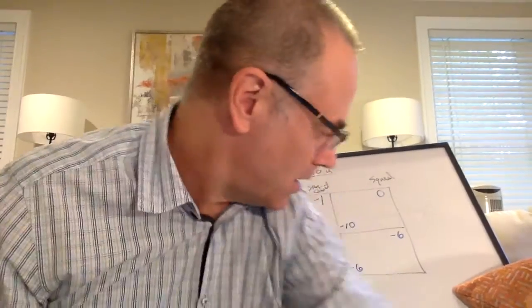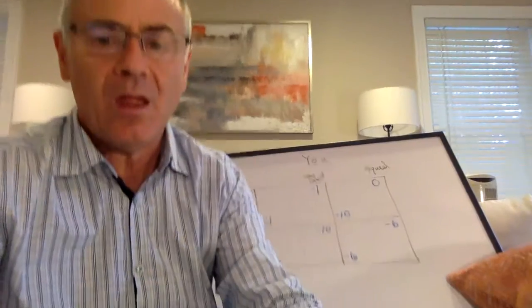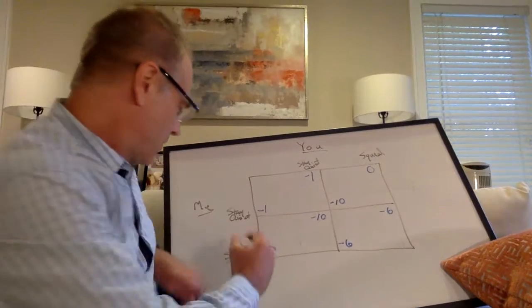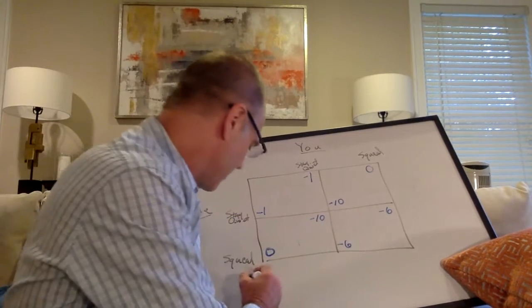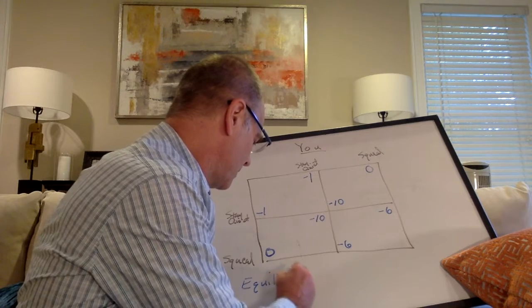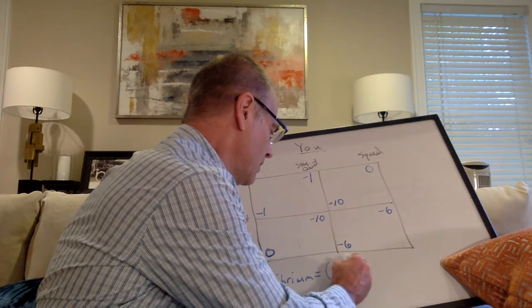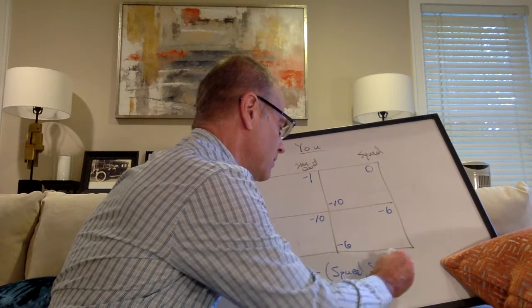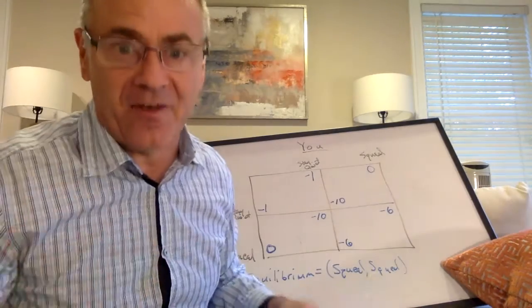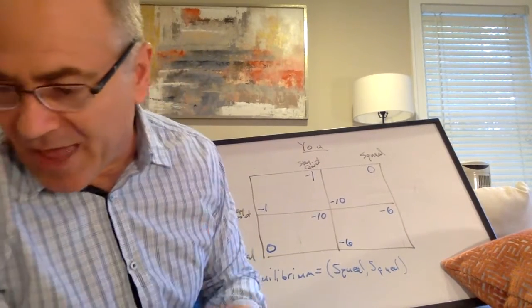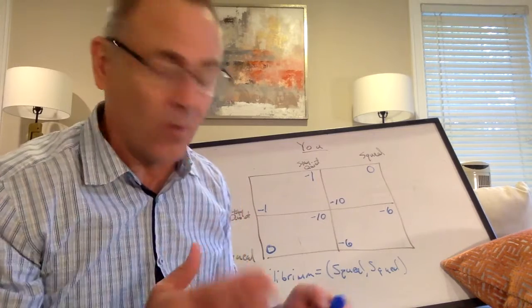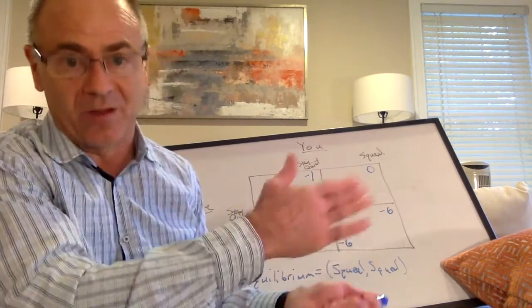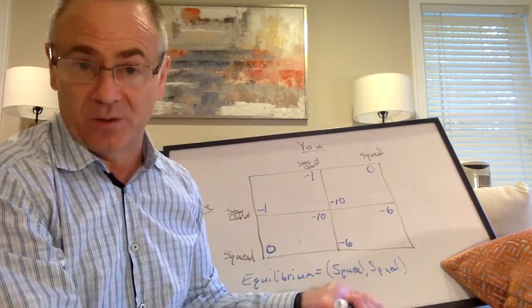We say that in this situation, the Nash equilibrium - the only equilibrium, and if you take a proper game theory course you'd call it the Nash equilibrium - but the equilibrium equals squeal-squeal, or you might call it defect-defect. The first thing to know about the prisoner's dilemma is that both players have a dominant strategy. They have one strategy that is best no matter what the other player is doing. Squeal in both cases. Second thing to know is the equilibrium is squeal-squeal.